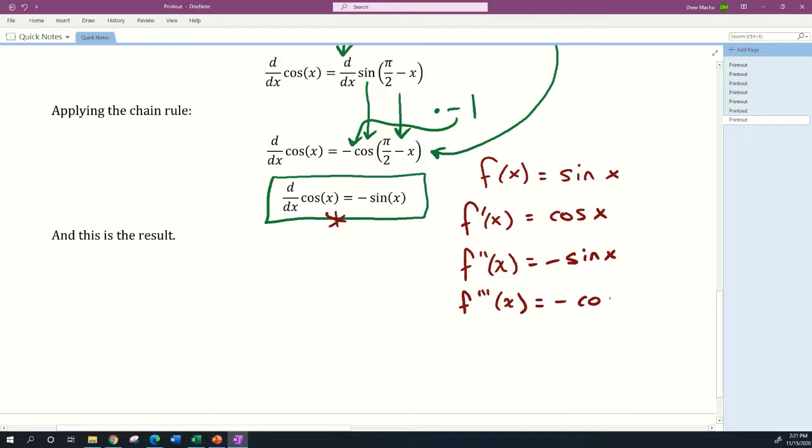And then what if I have f''''(x)? Well, that is going to be the derivative of -cos(x), which is actually going to be positive sin(x). Now I'll let you guess: when I take the fifth derivative of x, which a lot of people write as f^(5)(x), well you just take the derivative of sin(x) again, which is cos(x).